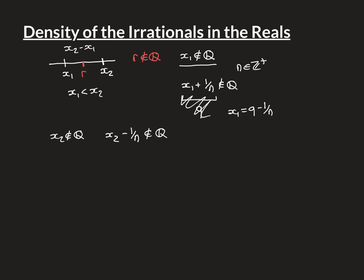This is guaranteed to be irrational by exactly the same proof by contradiction: if x2 minus 1/n were rational q, then adding 1/n to both sides gives x2 = q plus 1/n. Since q and 1/n are both rational, x2 would be rational — a contradiction. So for all cases where x1 is irrational, x2 is irrational, or both are irrational, we can find an irrational number between the two. If both are irrational, the proof works from either end.